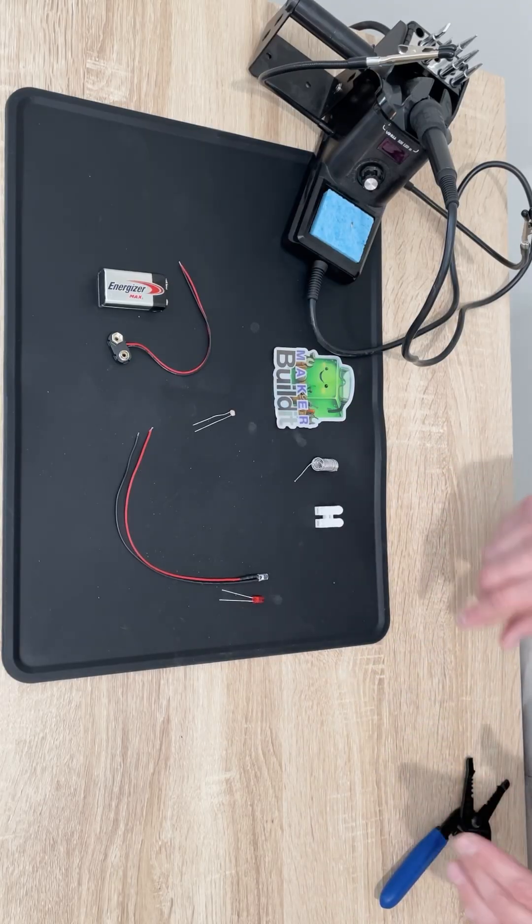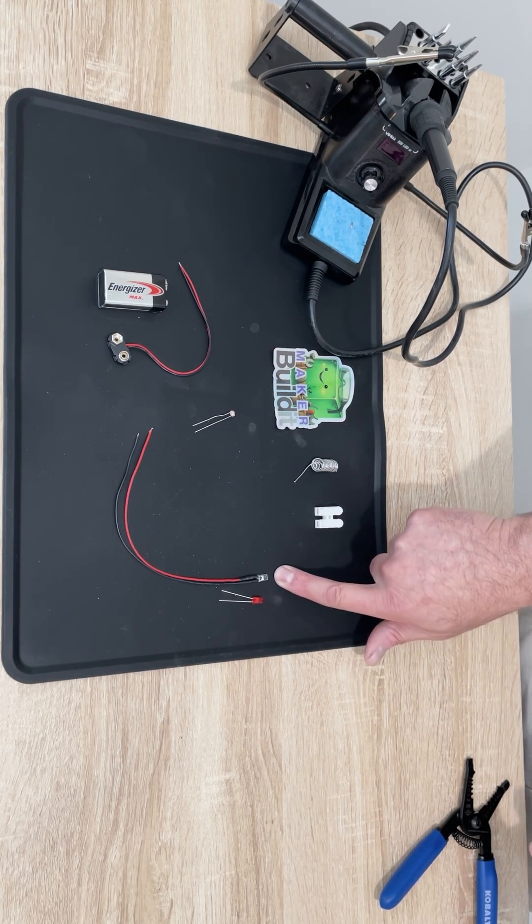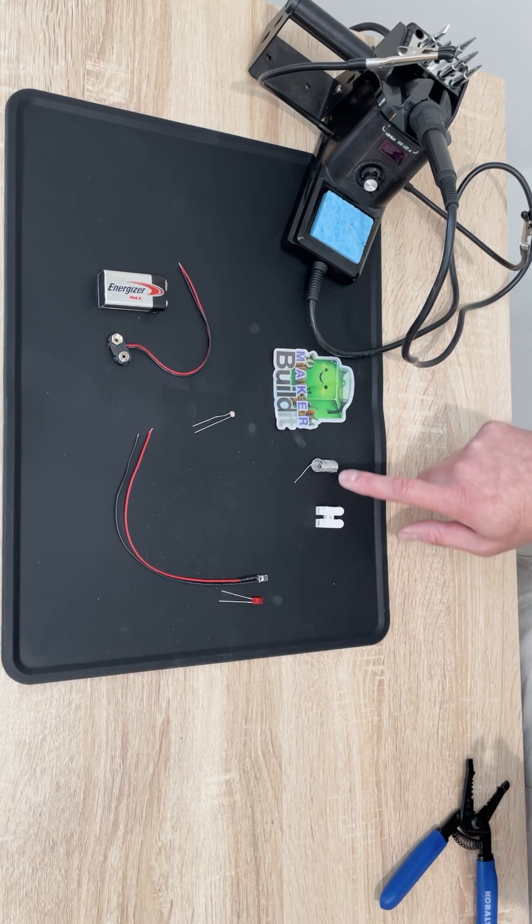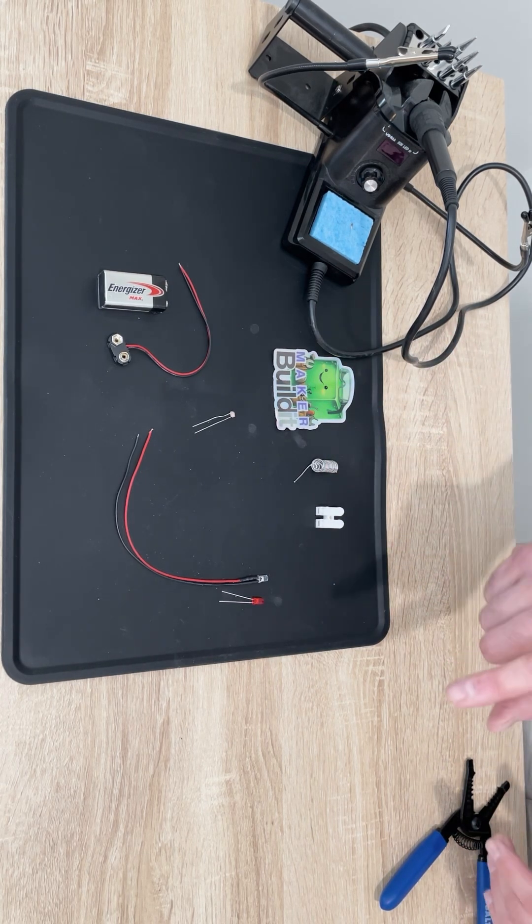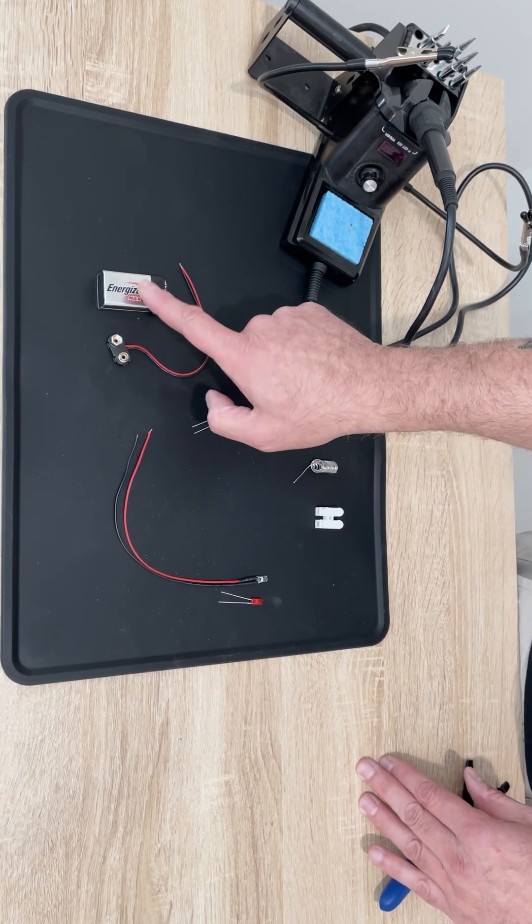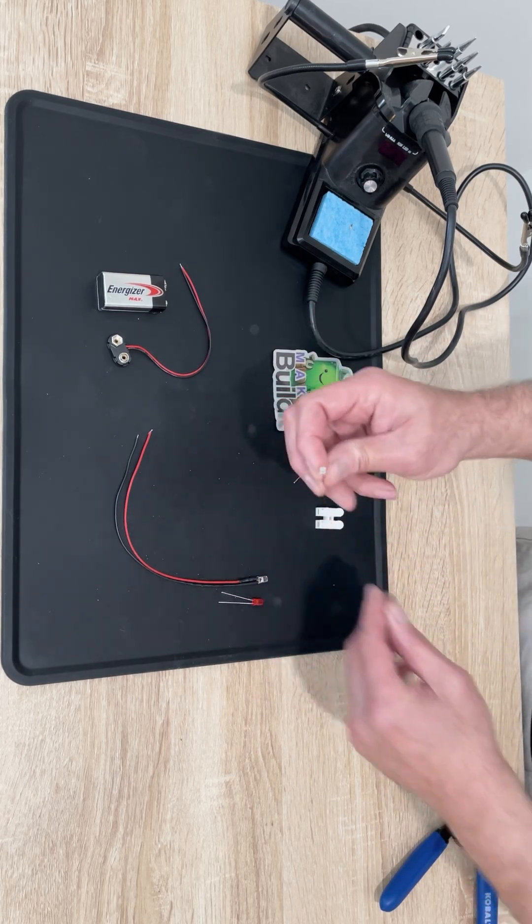We're going to need a few items for this build. We're going to need an LED or a wired LED with a resistor in it. We're either going to need quick connects or some solder to solder the joints together, and I'm going to show you how to do both. We're going to need a connector for our battery and our battery, and we're going to need a photoresistor.